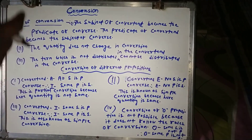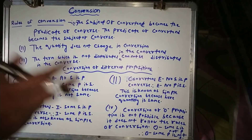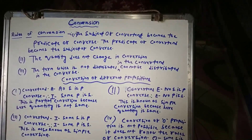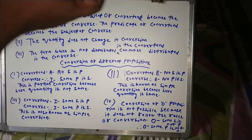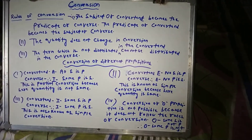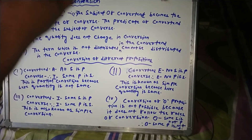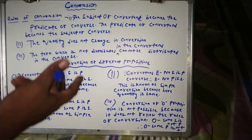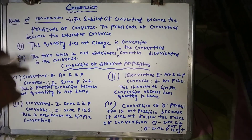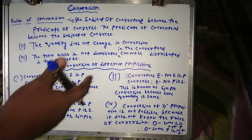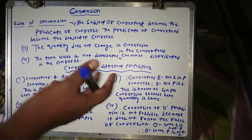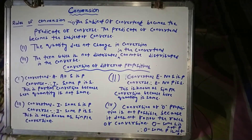Conversion is a form of immediate deductive inference in which the subject of the premise becomes the predicate of the conclusion and the predicate of the premise becomes the subject of the conclusion. The premise of conversion is known as the convertent and the conclusion is known as the converse. This is the rule of conversion and the conversion of different types of propositions.